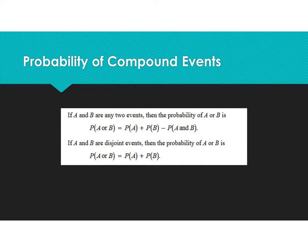So how you're going to find the probability of two events happening is you are always going to add the probabilities together. Now if there is overlap, you must subtract the overlap. The reason is because otherwise you're counting those events twice.